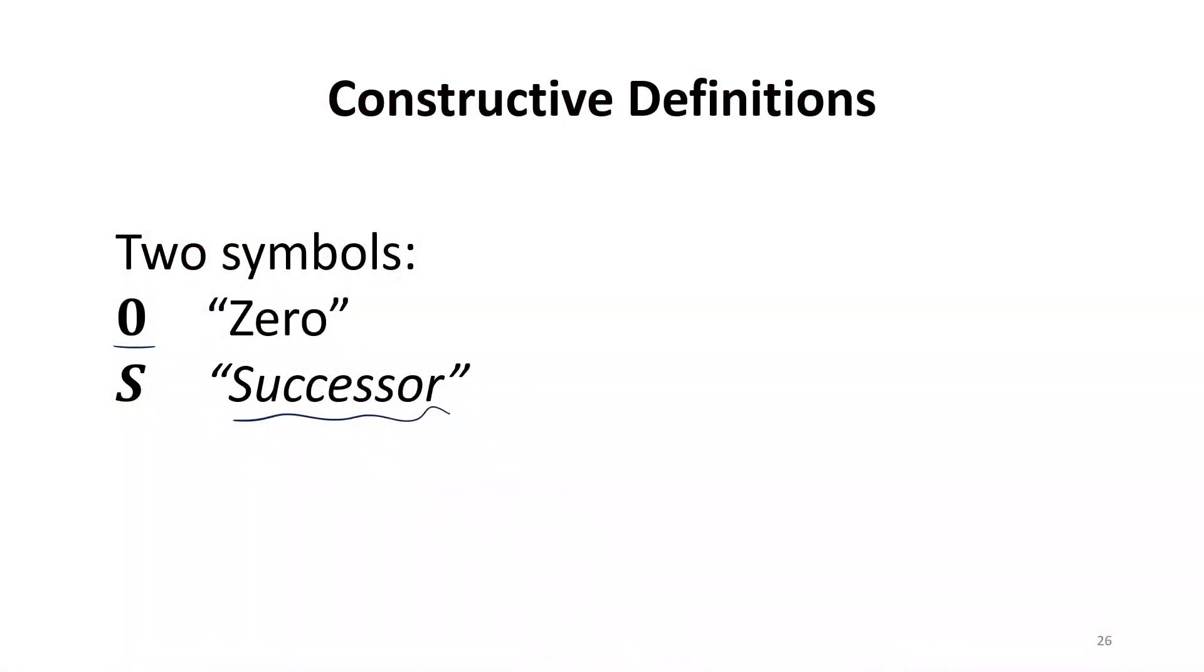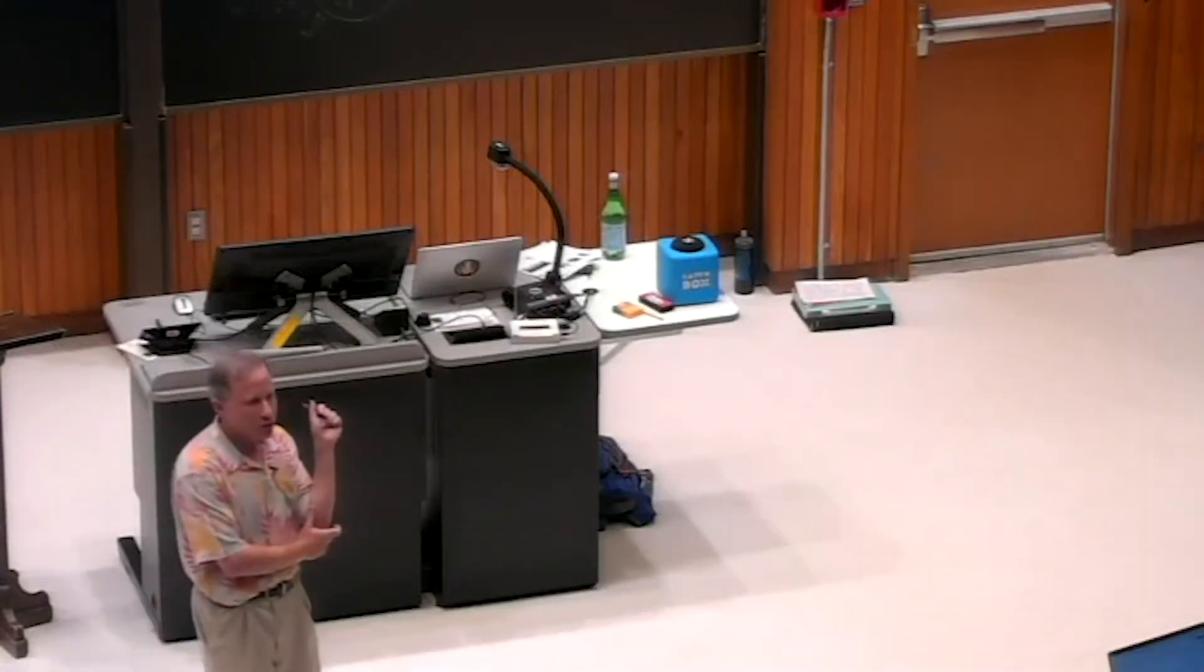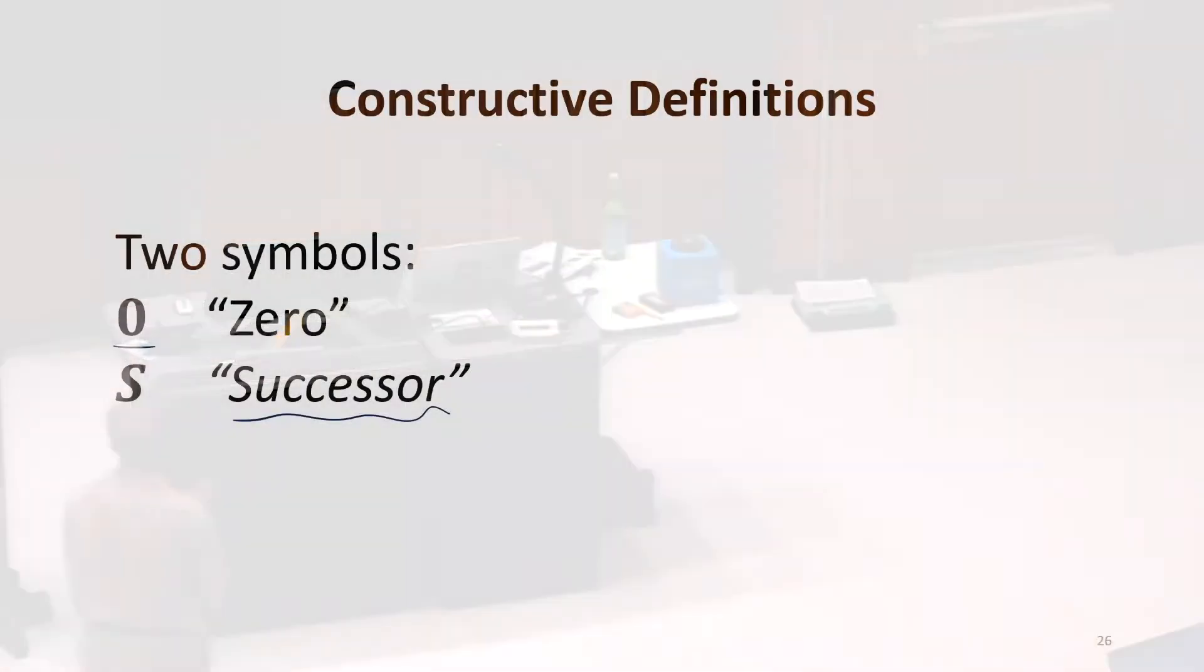But we haven't given it any meaning yet, right? We've just made up a notation. So now we want to try to define what the natural numbers are. So, do we have a starting point? Do we have any natural numbers already? Good. Zero is a natural number. That's the reason we had that symbol.